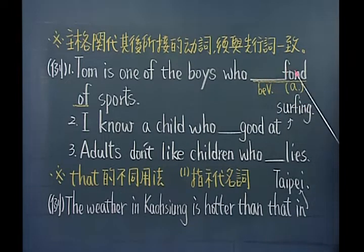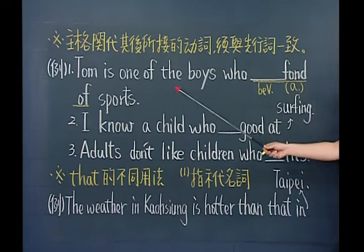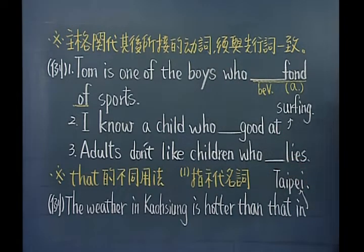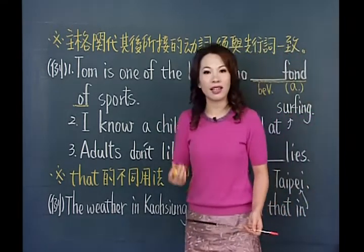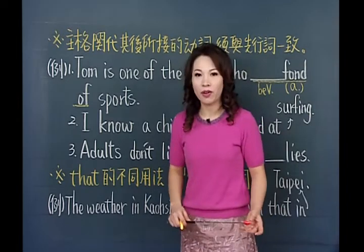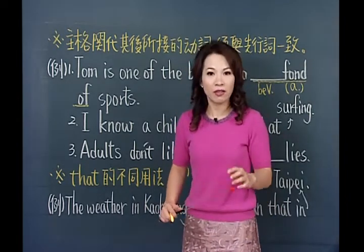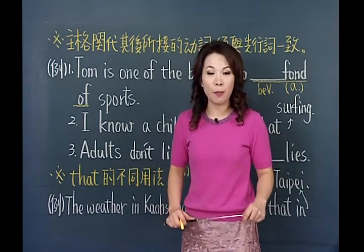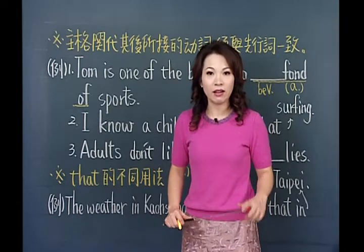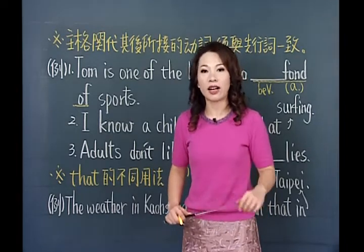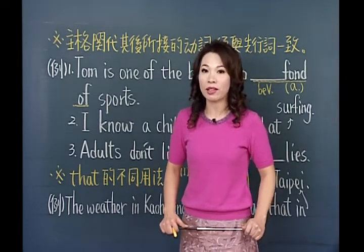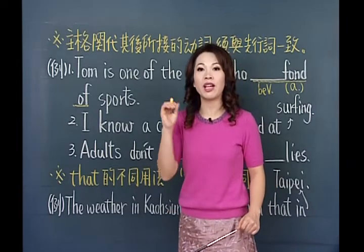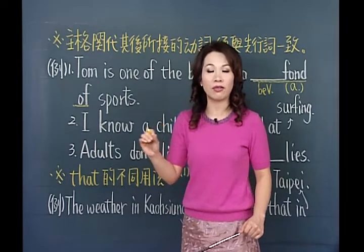第一个例句：Tom is one of the boys，Tom是其中一个男孩。后面要填一个动词，这里有个片语叫做be fond of，F-O-N-D，fond是形容词，意思是喜爱的。形容词前面配be动词，形成be fond of，表示喜欢某事，也就是like的意思。比如I'm fond of sports，等于I like sports。